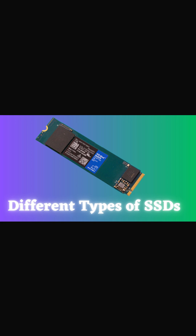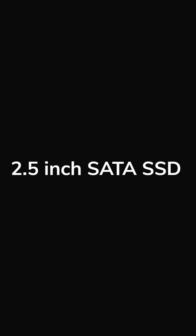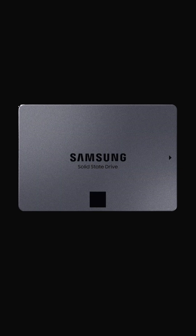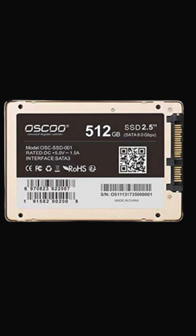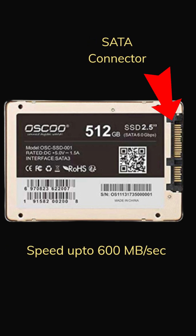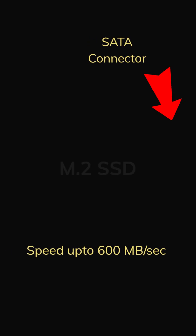There are mainly four distinct types of SSD. Let's discuss them. The first is the 2.5-inch SATA SSD, which is designed to fit into the same slots as traditional 2.5-inch HDDs. It utilizes the SATA interface and offers speeds of up to 600 MB per second.